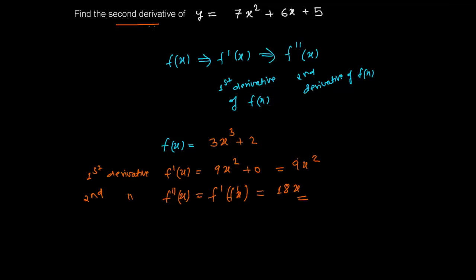Second derivative means derivative of the derivative of a function. If you have any function f(x), then the first derivative is f'(x) and the second derivative is f''(x) — meaning it is simply the derivative of the derivative of a function. First find out the first derivative f'(x), and then find out the derivative of that. The final result will be your second derivative.